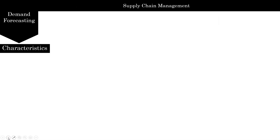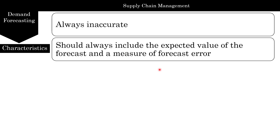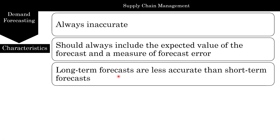The characteristics of demand forecasting: the first thing about forecasting is you are always going to be wrong — it's always going to be inaccurate, there's always an error. You should always include the expected value of the forecast and the measure of forecast error, so you have to look at on average what your forecast is going to be and what your error is going to be. It's probably a good idea to build in confidence intervals into your forecast. Long-term forecasts are less accurate than short-term — the further back your data is, the less accurate your forecast is going to be.